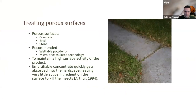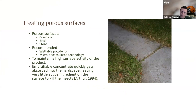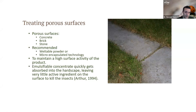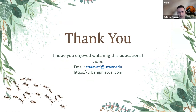On porous surfaces: when applying to concrete, brick, or stone, it's recommended to use a wettable powder or a product with microencapsulated technology to maintain high surface activity. Avoid emulsifiable concentrate (EC) products on porous surfaces unless they have microencapsulated technology, because most of the active ingredient will get absorbed into the substrate and the treatment won't be effective. Thank you all very much.